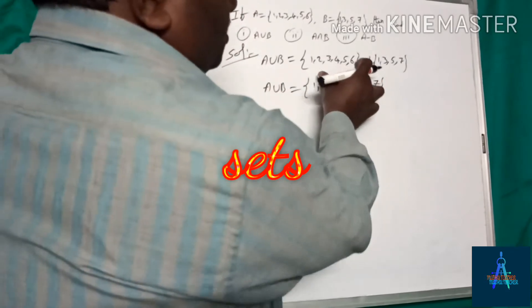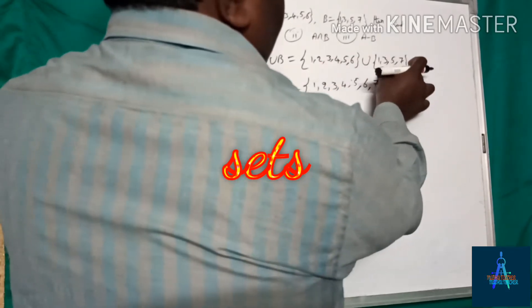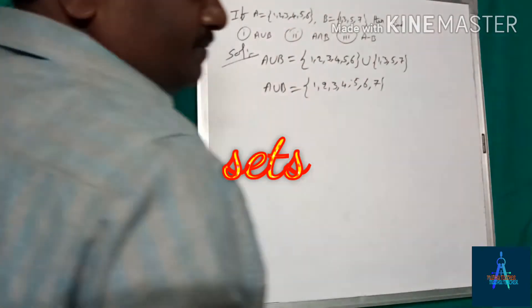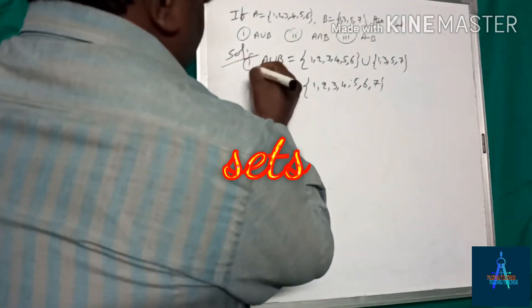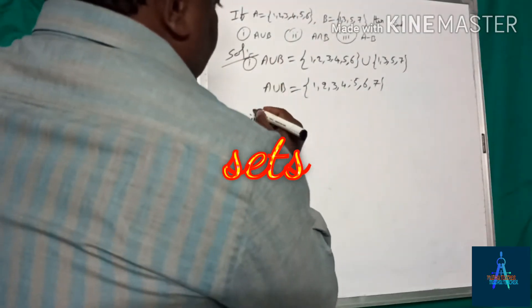This is A union B — all the elements in A and B combined. So this is the first one.